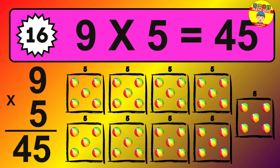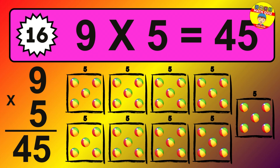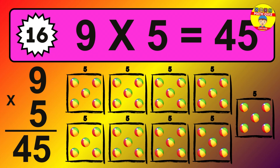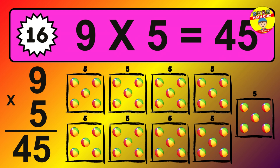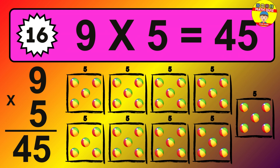Question 16. 9 times 5 equals what? The answer is 9 times 5 is 45. To calculate, we have 9 groups with 5 balls each one. So, how many balls do we have? 45 balls.